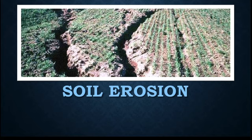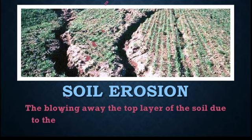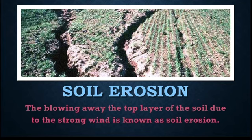The soil is swept away — that is, moved away. This washing or blowing away of the top layer of the soil due to strong wind and rain is known as soil erosion. When it rains heavily or wind blows strongly, the soil on the top layer moves away because of the strong wind and heavy rainfall, and that is known as soil erosion.